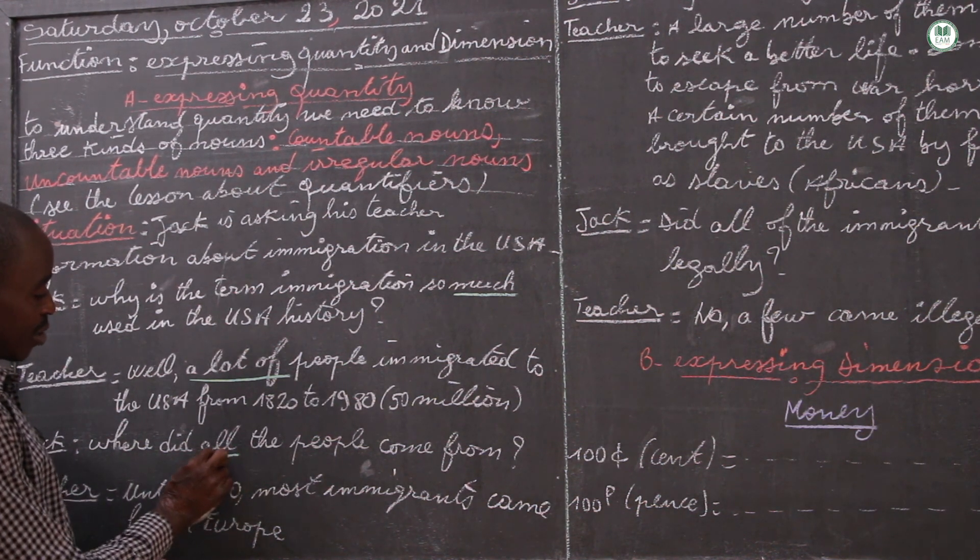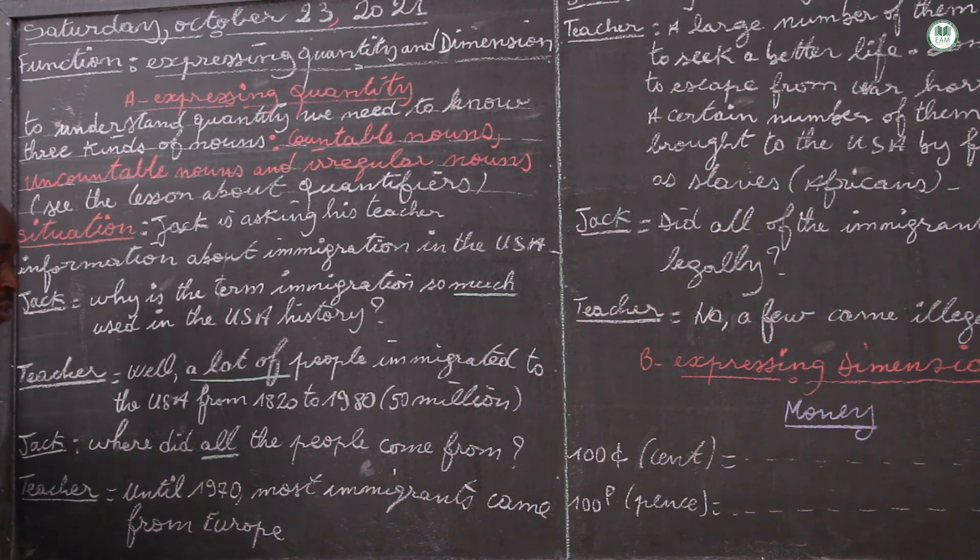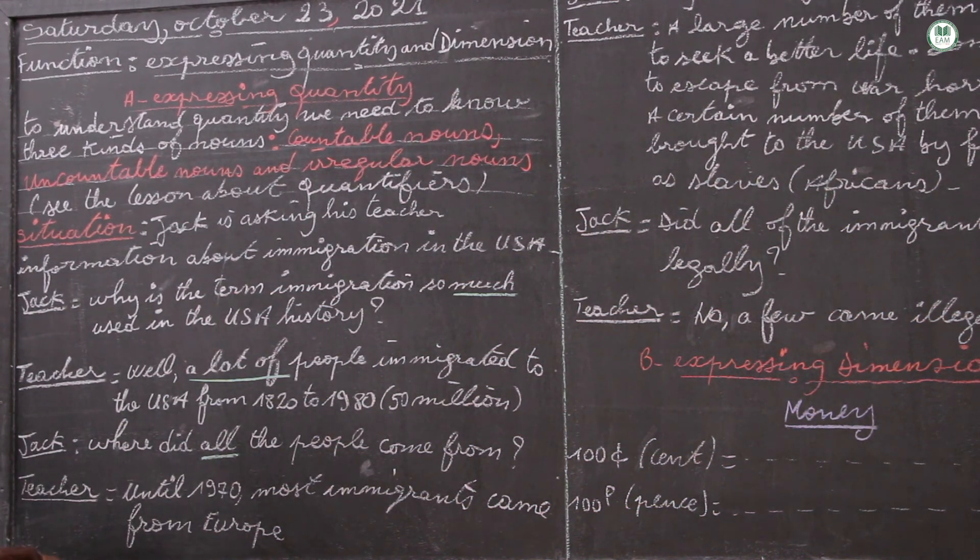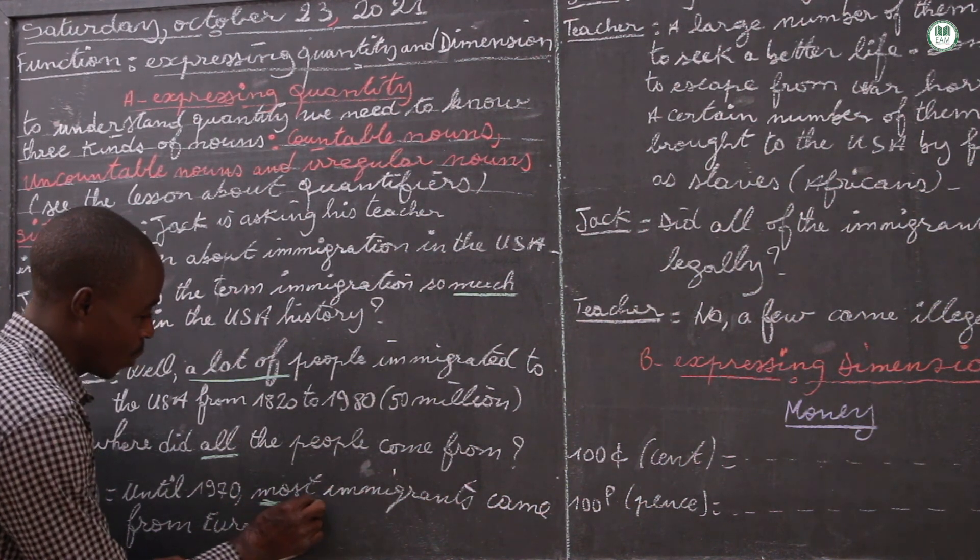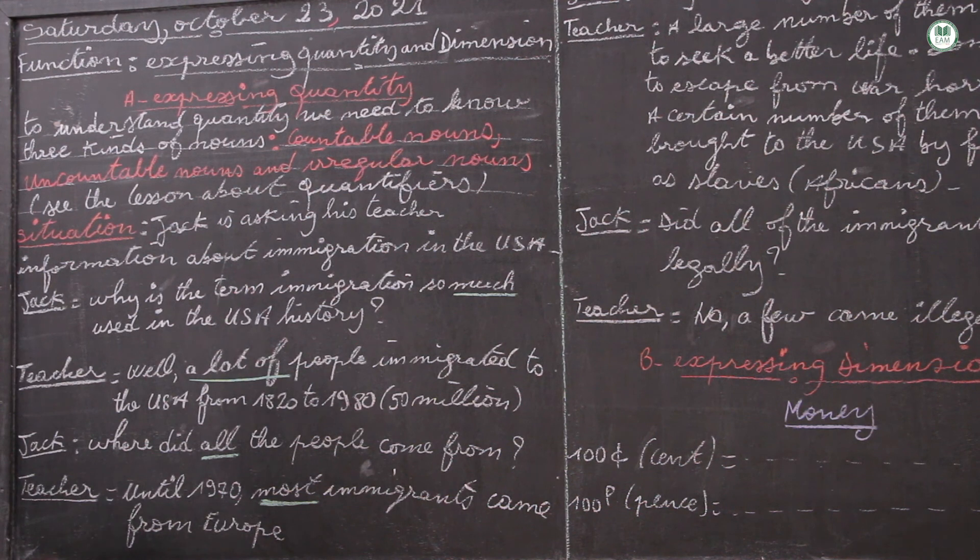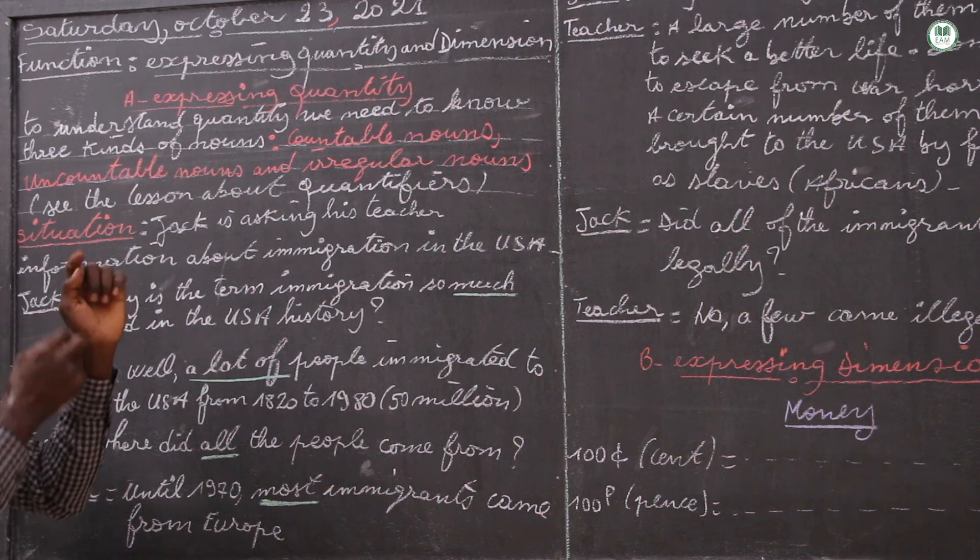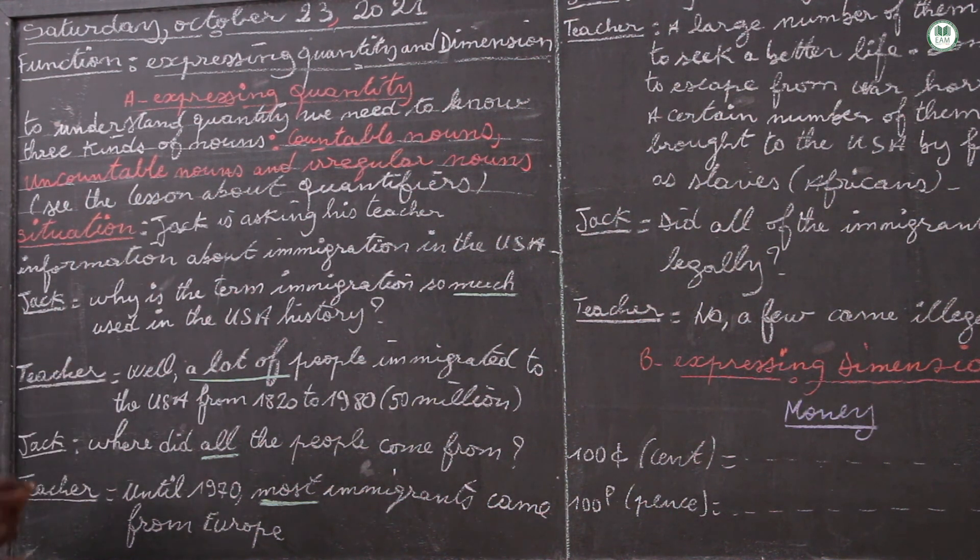Now where did all - so we have a case of quantifiers, quantitative all - people come from? And we said here until 1970 most immigrants - case of countable - came from Europe. This is what it is, so we have the situation of countable and uncountable.